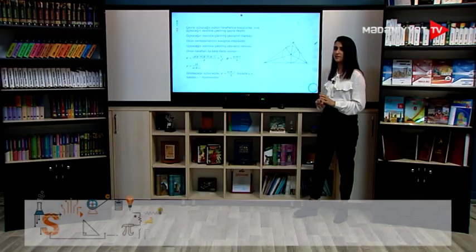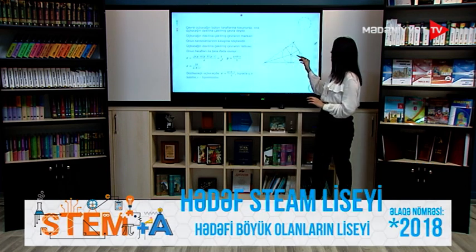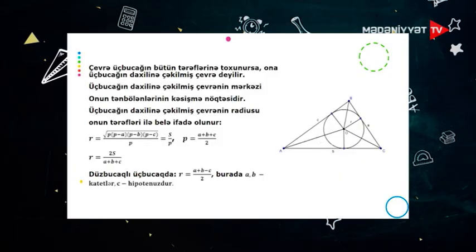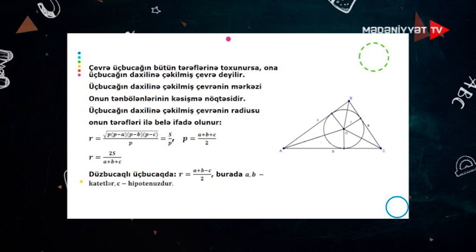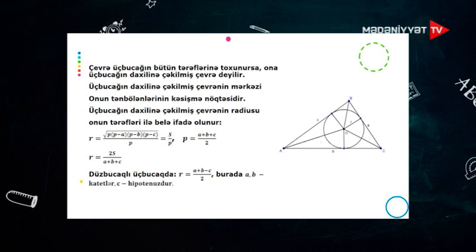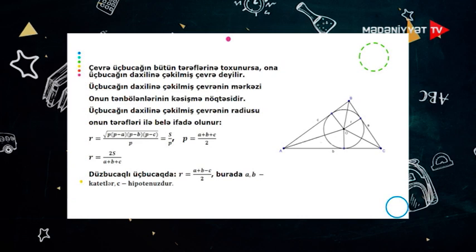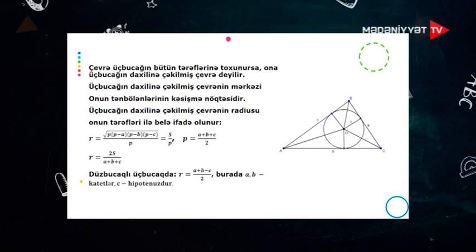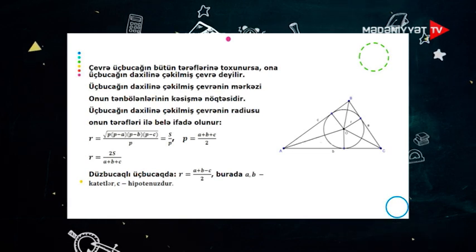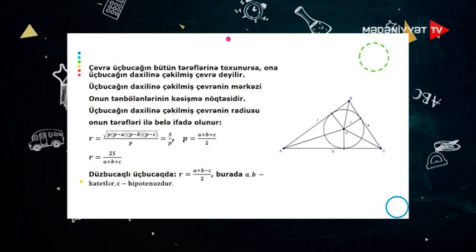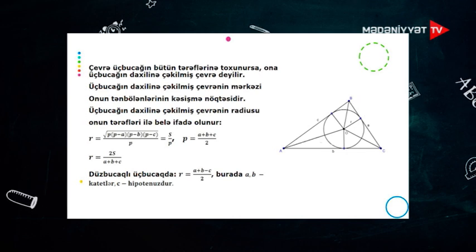İndi isə biz çevrə daxilinə və xaricinə çəkilmiş üçbucaqlar haqqında danışacaq. Əgər çevrə üçbucağın bütün tərəflərinə toxunursa, ona üçbucağın daxilinə çəkilmiş çevrə deyilir. Üçbucağın daxilinə çəkilmiş çevrənin mərkəzi onun tənbölənlərinin kəsişmə nöqtəsidir. Onun radiusu tərəfləri ilə bu cür ifadə olunur: kiçik r = √(p(p−a)(p−b)(p−c)) / p, bu da bərabərdir S/p-yə. Buradakı p yarım perimetrdir, yəni p = (a + b + c) / 2.